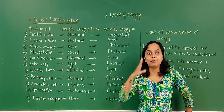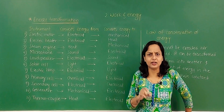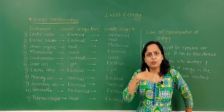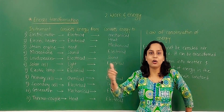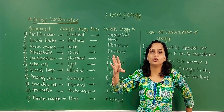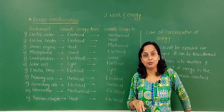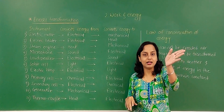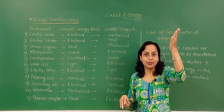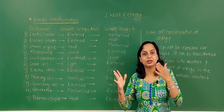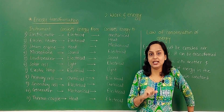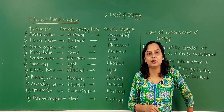Now, if we use that electricity — for example, if we switch on a fan — electric energy gets converted into mechanical energy, and also into heat energy or light energy. So the chain is: potential energy → kinetic energy → mechanical energy → electric energy → mechanical or heat or light energy. This shows that energy is just transformed — it is never created or destroyed.